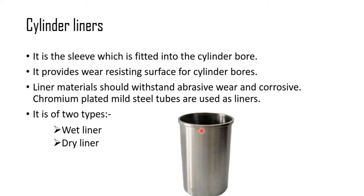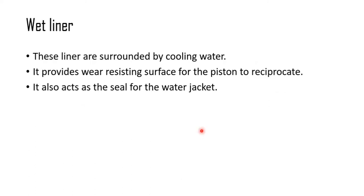The wet liner is surrounded by cooling water. It provides a resisting surface for the piston to reciprocate, and it also works as a seal for the water jacket. In the wet liner, the liner itself has grooves to circulate water and provide cooling.